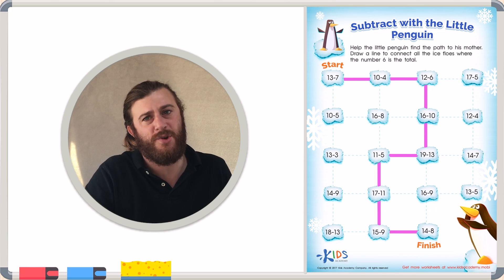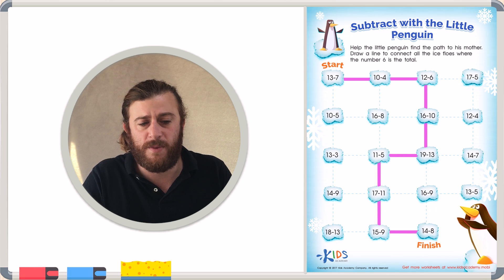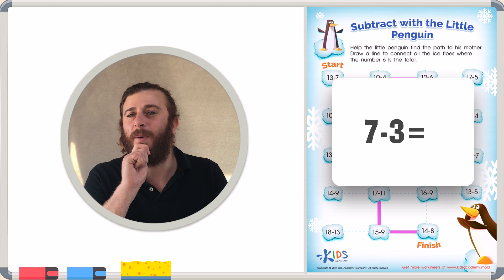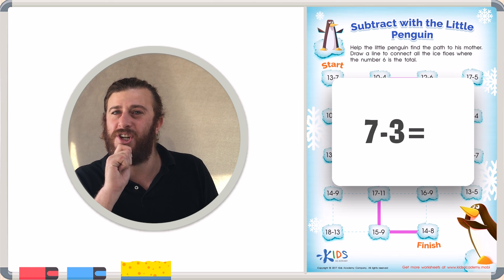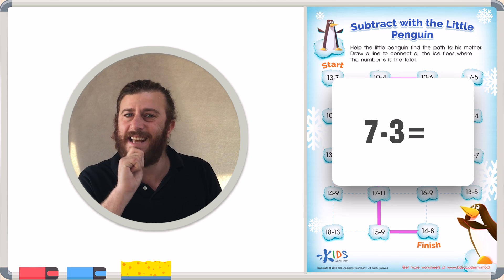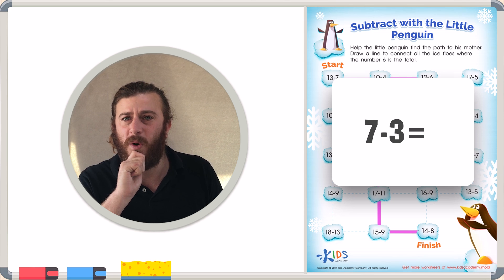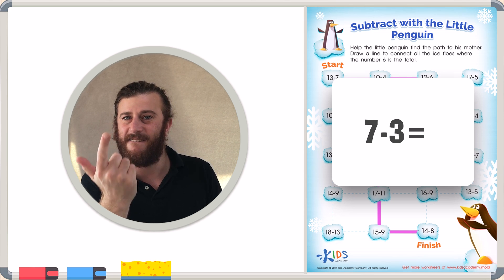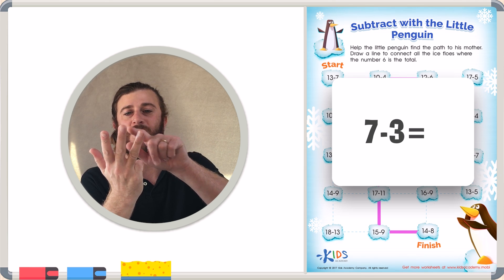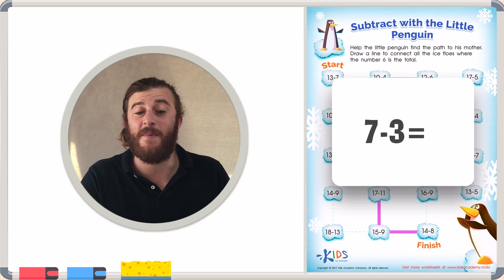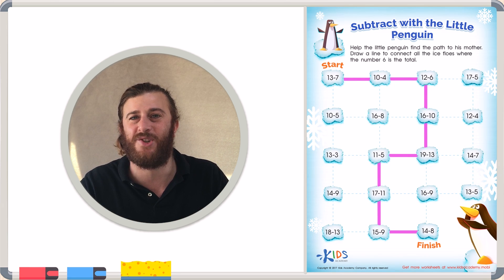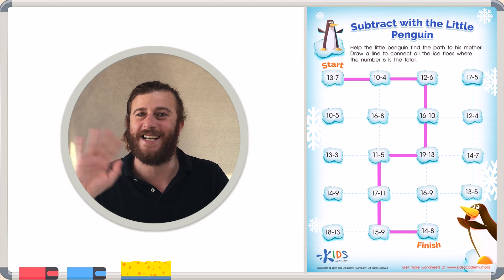Great job using the counting back strategy, boys and girls. Remember when you're subtracting, for example, like 7 minus 3 in our example, say the number, but don't count it. Touch your chin just to make sure. 7. And then count backwards to the other number using your fingers to help. 7, 6, 5, 4, 3. Count the fingers. 1, 2, 3, 4. 7 minus 3 is 4. Great job, boys and girls, using the counting back strategy with the penguin. We'll see you next time.